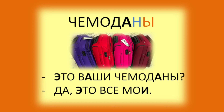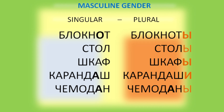Это ваши чемоданы? Are these your suitcases? Yes, these are all mine. Notice that the ending of the noun changes in the plural. In English we say 'notebook' and the plural 'notebooks.' So in Russian the masculine words change as follows: блокнот → блокноты, стол → столы, шкаф → шкафы, карандаш → карандаши, чемодан → чемоданы.